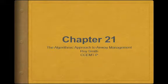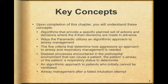This is Chapter 21, Algorithmic Approach to Airway Management. After completion of this chapter, you'll be able to understand algorithms that provide a specific plan, set of actions, and decisions where the if-then decisions are made in advance. Ways the paramedic utilizes an algorithmic approach to airway management. The five criteria that determine how aggressive an approach to airway and respiratory management is needed. Disease processes encountered in the pre-hospital environment that can cause the patient's airway or respiratory status to deteriorate. The algorithmic approach to patients who initially cannot be ventilated, and airway management after a failed intubation attempt.